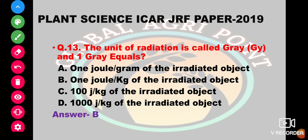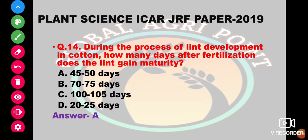During the process of fiber development in cotton, how many days after fertilization does the fiber attain maturity? The options are 45 to 50 days, 70 to 75 days, 100 to 105 days, or 20 to 25 days. The answer is 45 to 50 days.